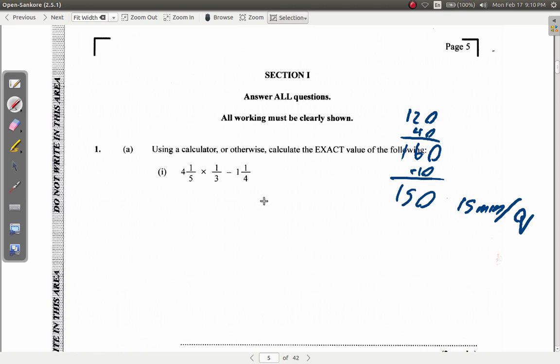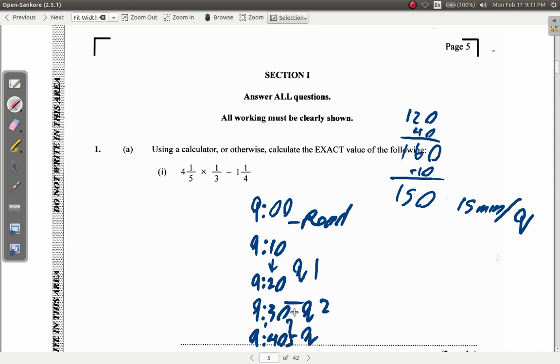So, what happens if the exam starts at 9 o'clock? You start, you read. Then at 9:10 to 9:20 is question 1, if you give yourself 10 minutes per question. From 9:20 to 9:30 is question 2. From 9:30 to 9:40 is question 3. From 9:40 to 9:50 question 4. From 9:50 to 10 o'clock question 5.